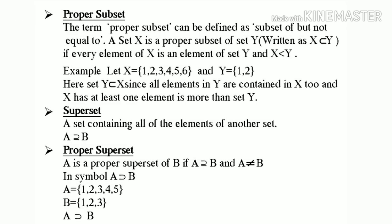Proper subset. The term proper subset can be defined as subset of but not equal to. A set X is a proper subset of set Y, written as X ⊂ Y, if every element of X is an element of set Y and X is not equal to Y. For example, let X equal to {1, 2, 3, 4, 5, 6} and Y equal to {1, 2}. Here set Y is a proper subset of X, since all elements in Y are contained in X and X has at least one element more than set Y.